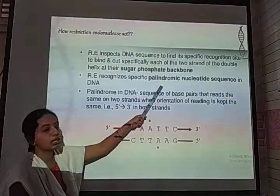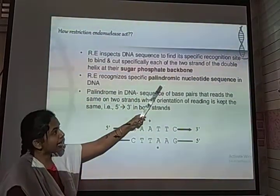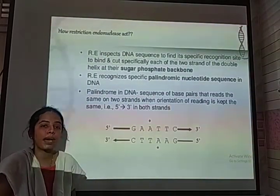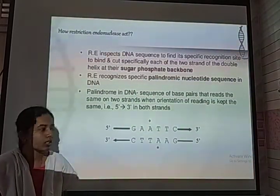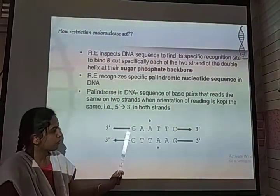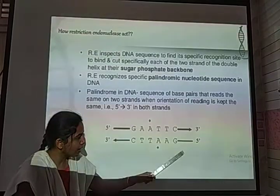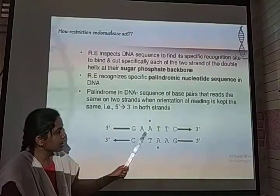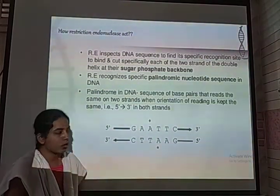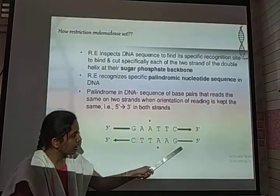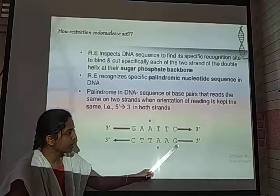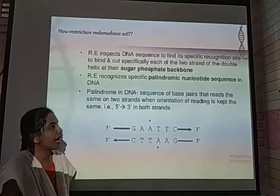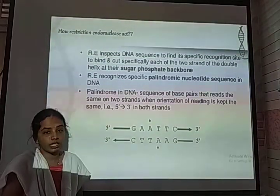The specific sequence recognized by restriction enzymes is called a palindromic sequence — a palindromic nucleotide sequence. A palindromic sequence is defined as a sequence which reads the same forward and backward. For example, GAATTC, when read backward, is also GAATTC. This is a palindromic sequence.